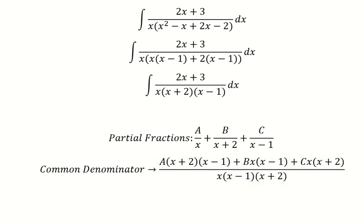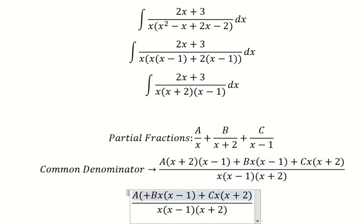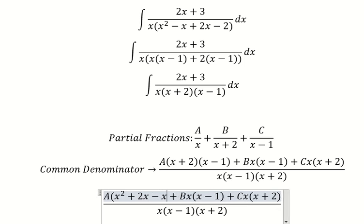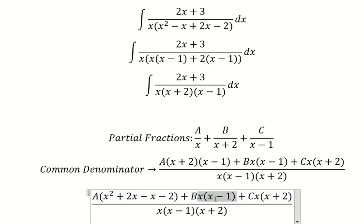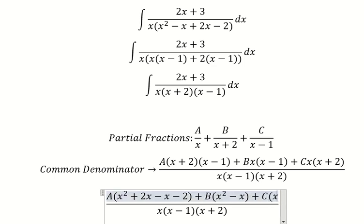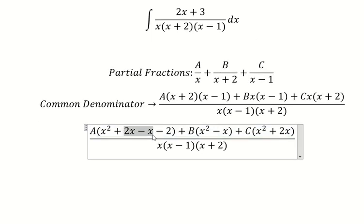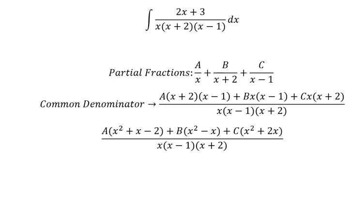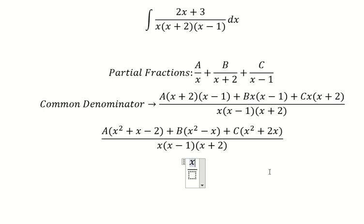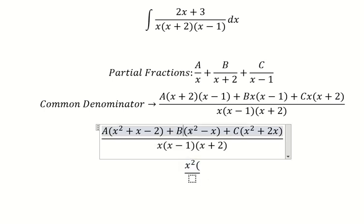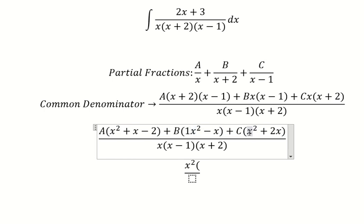Now we expand. For A: (x plus 2)(x minus 1) gives x² plus 2x minus x minus 2, which simplifies to x² plus x minus 2. For B: x(x minus 1) gives x² minus x. For C: x(x plus 2) gives x² plus 2x. Now we arrange based on the terms: for x², we have A, B, and C each with coefficient one.